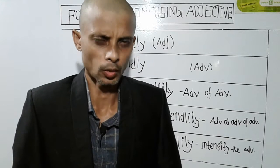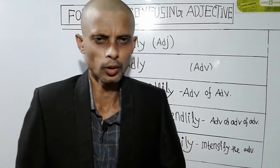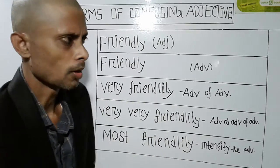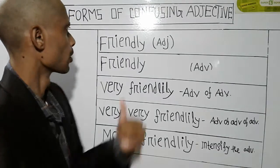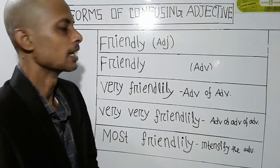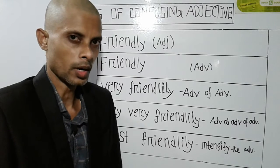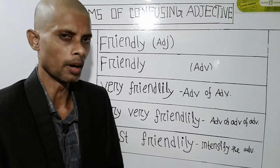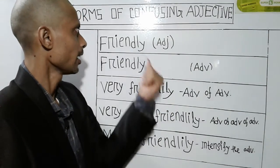It is called a -ly adjective. First of all, it is friendly — it is called a friendly. We know that the -ly ending is part of an adjective. It is called an adjective.